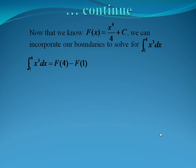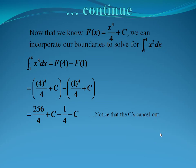Now that we know the antiderivative, we can incorporate our boundaries. By the fundamental theorem of calculus, the integral from one to four of x cubed dx is f of four minus f of one, where capital F is x to the fourth over four plus c. So plugging those bounds in, we have four to the fourth over four plus c, minus one to the fourth over four plus c. The minus sign gets distributed to everything in the second parenthesis, so the c's are going to cancel out.